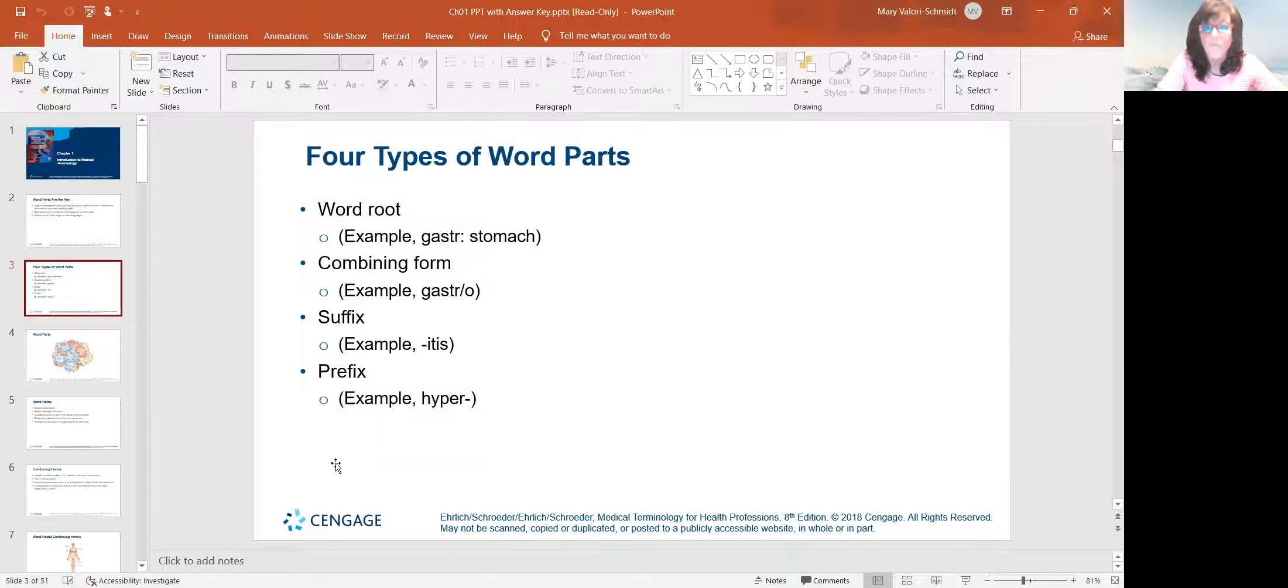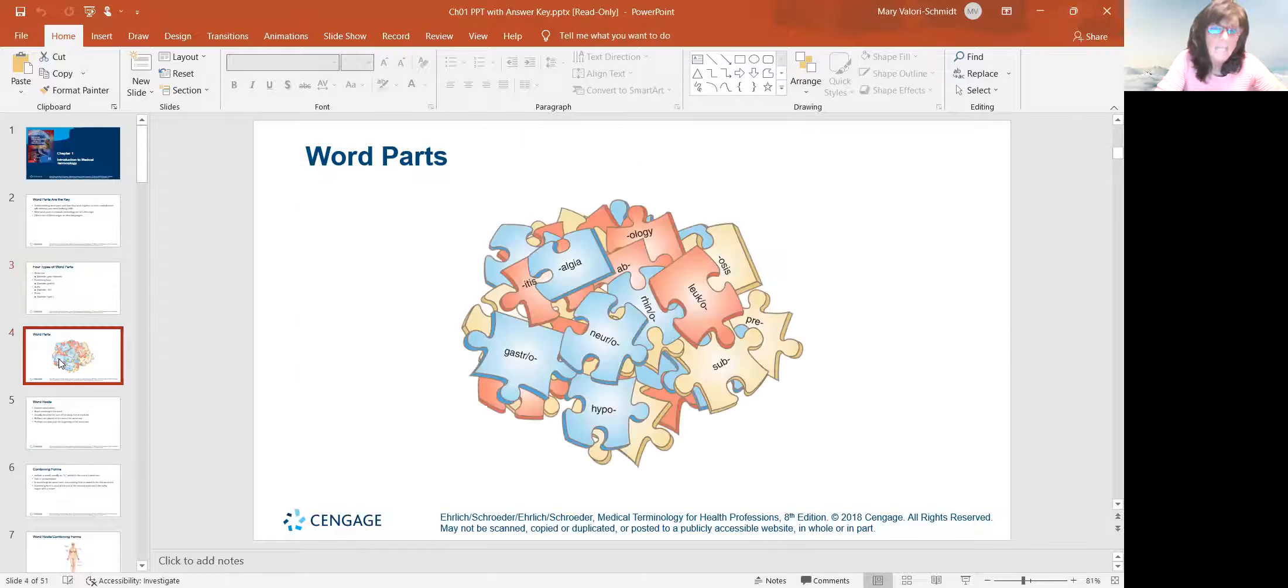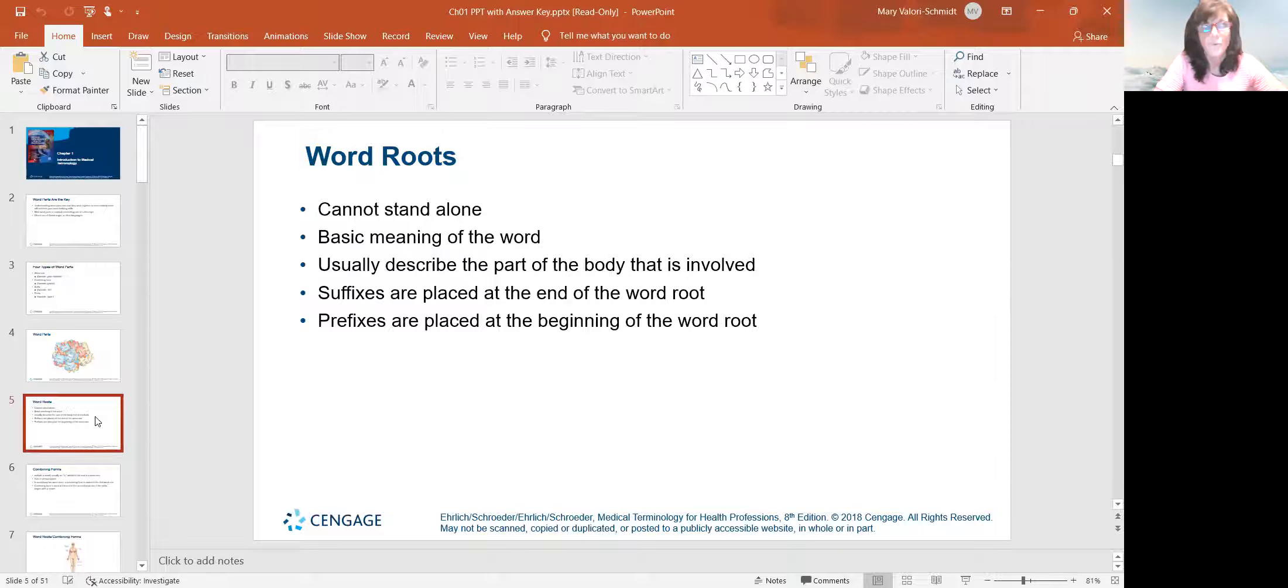So those are the four types of word parts: the root, the combining form, the suffix or the prefix. There are lots of words that are the roots of words, and we're going to try to talk about the most common ones.